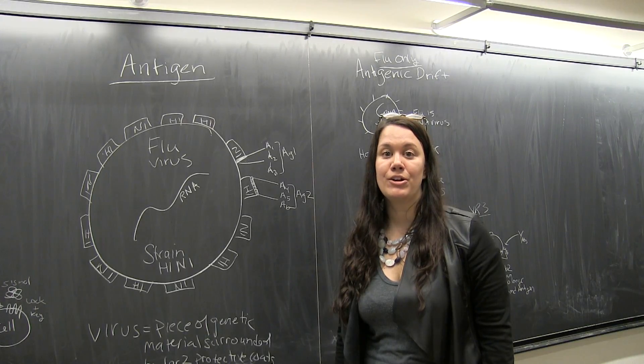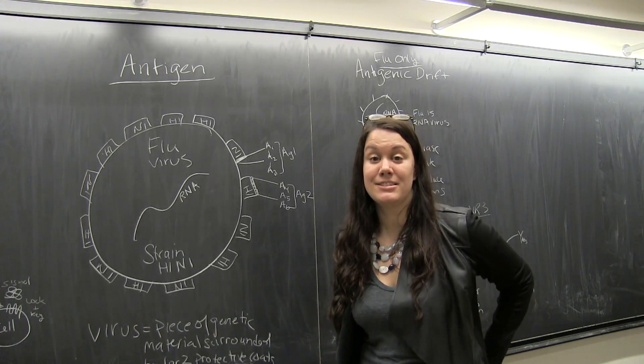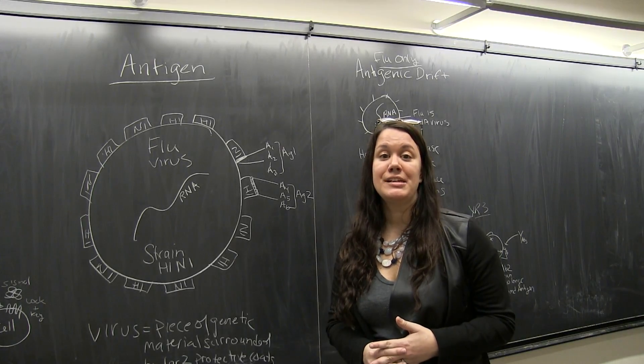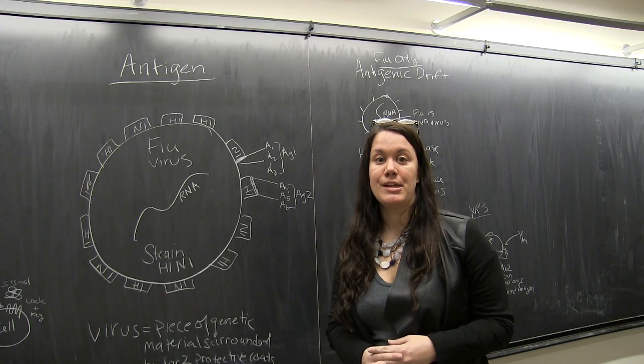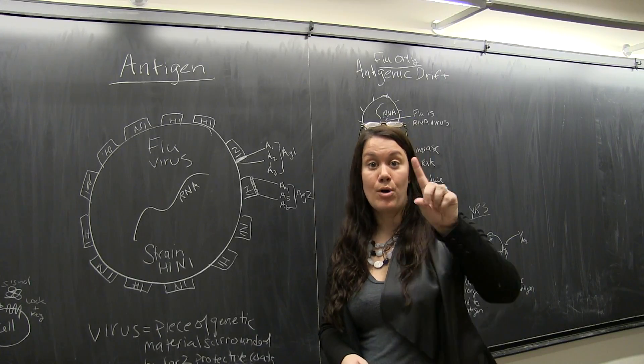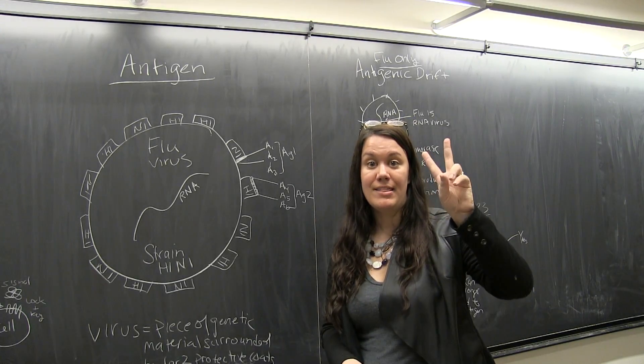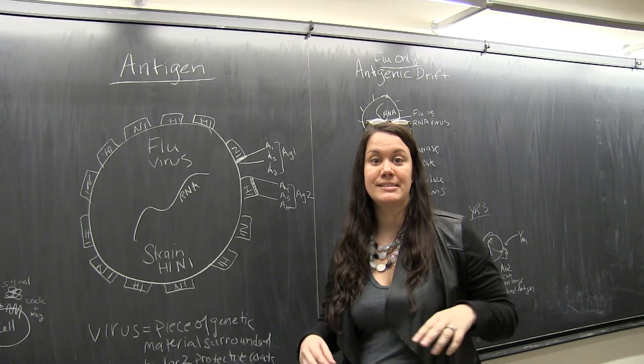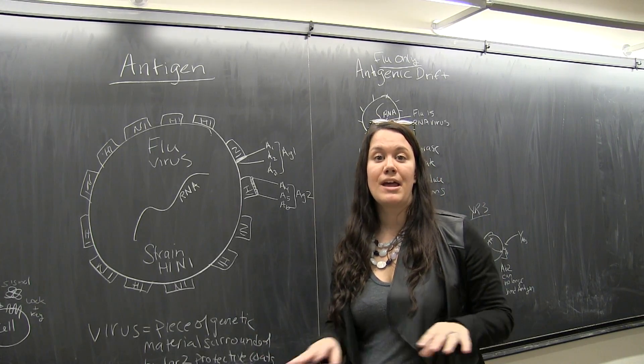Okay, welcome back team. Now we're going to go over what exactly an antigen is. So basic definition first: an antigen is any part of a pathogen that the body's immune response will recognize as one, foreign, and two, harmful to the body. So something that's going to cause disease and symptoms.